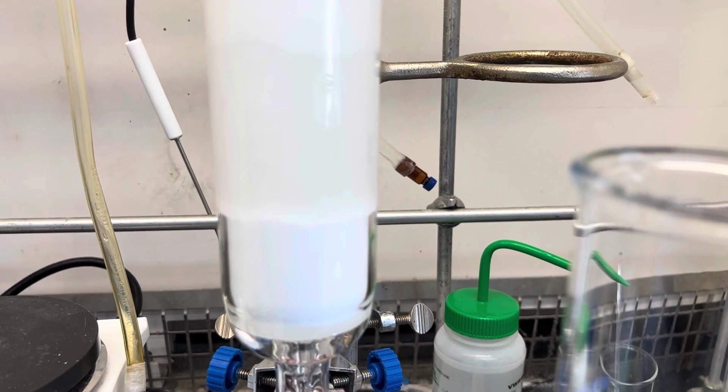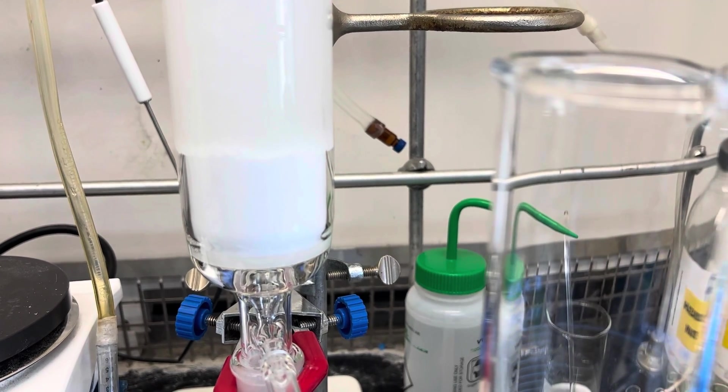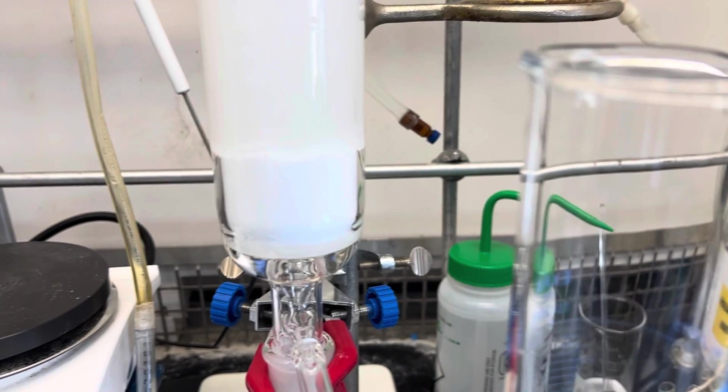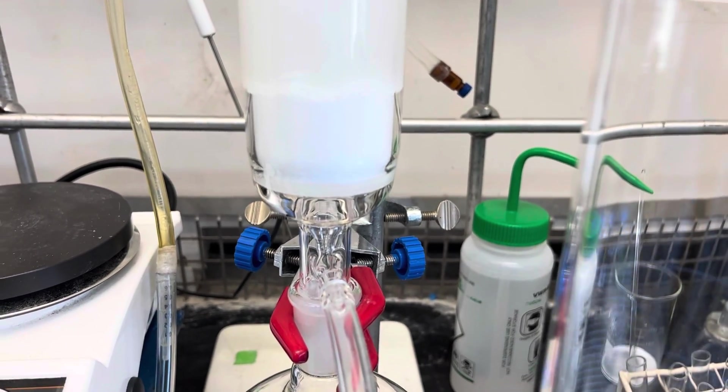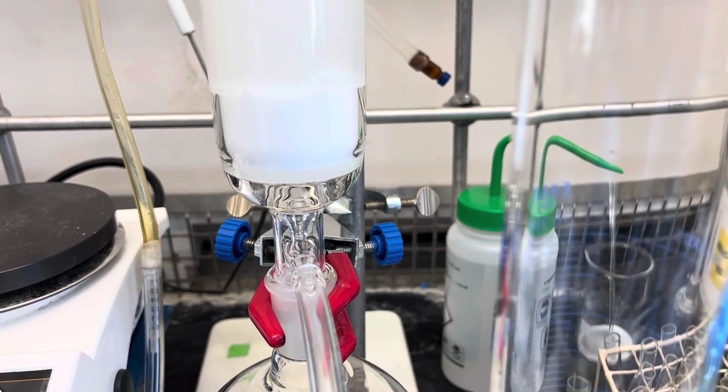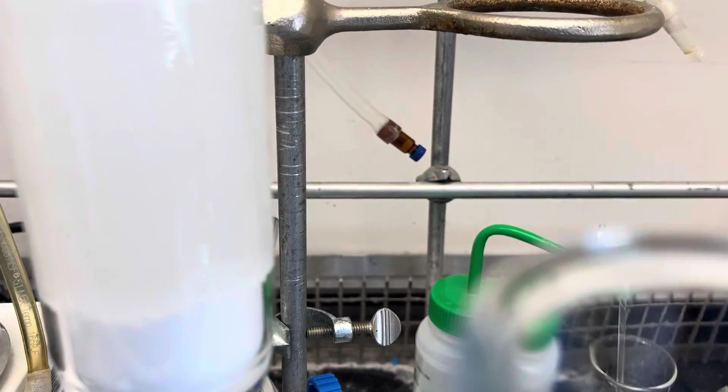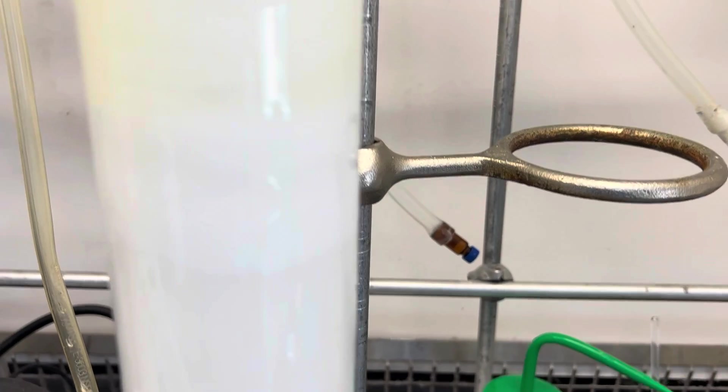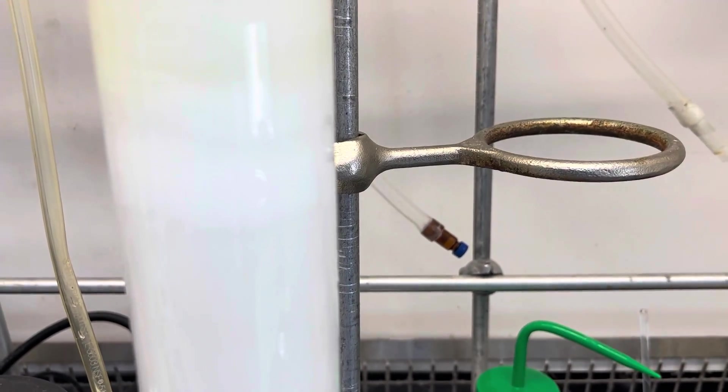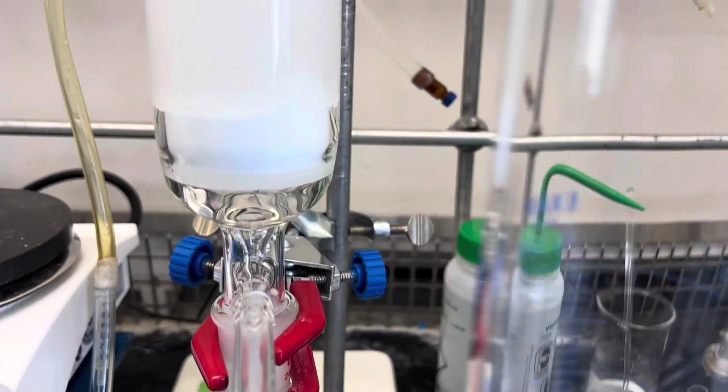Each fraction, each time you will run like 500 mL based on the column size and the crude size. For this size of column each time I will run 500 milliliter of the solvent and that solvent will be collected in one flask. Then I will change to another flask connected with this column and check the TLC for the first collected flask.